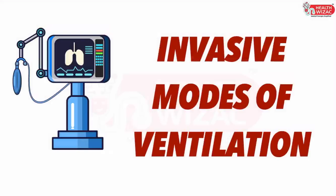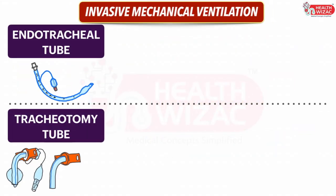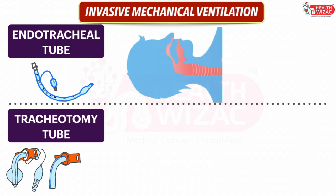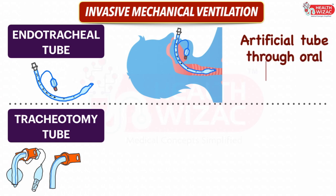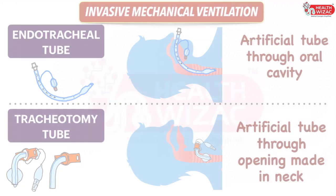In invasive ventilation, the patient is connected to a ventilator either via endotracheal tube or tracheostomy tube. Endotracheal intubation is putting an artificial tube in the trachea via the mouth, whereas tracheostomy is putting a tube in the trachea through an artificial opening created in the neck.